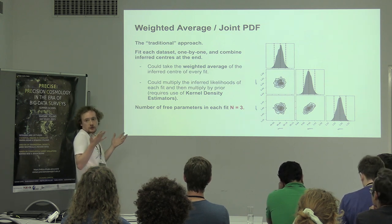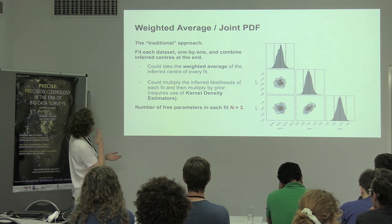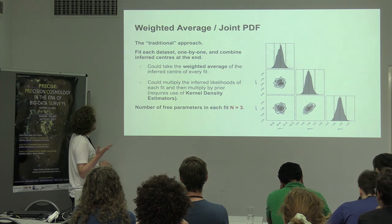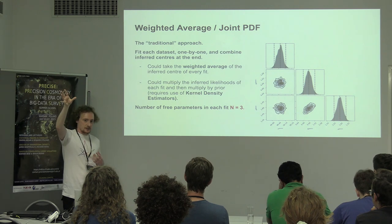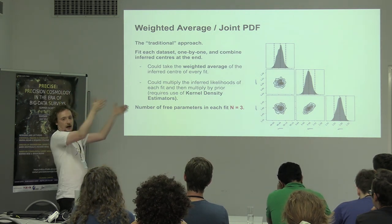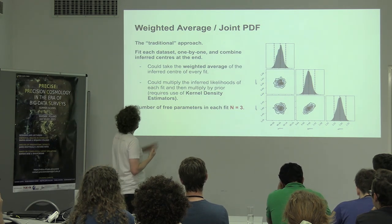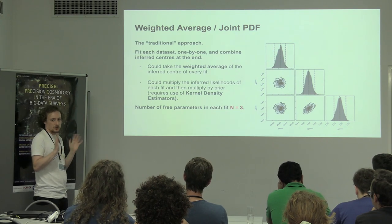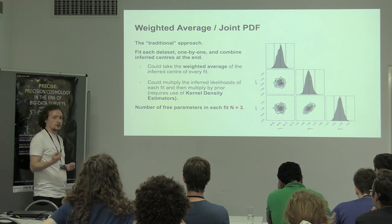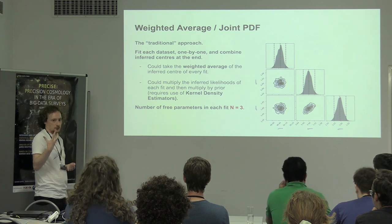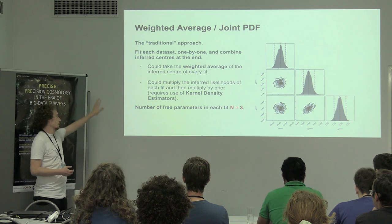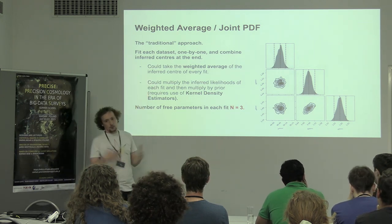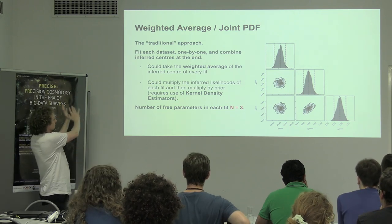In the traditional approach — what we would have done using the tools from sessions one and two — we fit each data set one by one. For each fit we infer a centre, and then at the end we combine those centres. If we fit five Gaussians we have five estimates of the centre; we combine those five estimates in some way — in the session we'll just take a very simple weighted average, though there are more advanced methods. The key point is: we have five Gaussians, we're doing five separate fits, each fit has three parameters — the centre, normalisation, and sigma — and we get a corner plot for each fit. All the centres are around 50, and the other parameters are varying around because that's the nature of the problem. This is how most astronomers would approach having many observations of different galaxies or spectra.